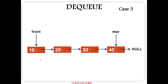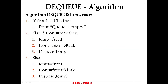Case 3: the Queue has more than one node. Front is the first pointer. The front node will be deleted. Set temp equal to front, then update front equal to front arrow link — this moves front to the next node. Then dispose temp. This is the else part handling Case 3.